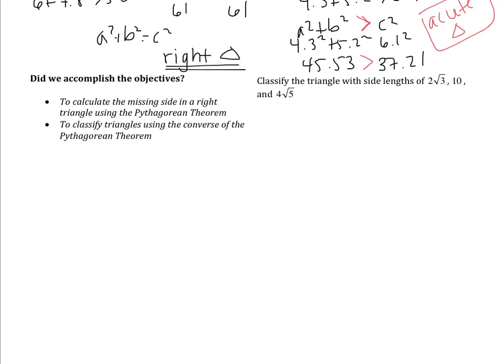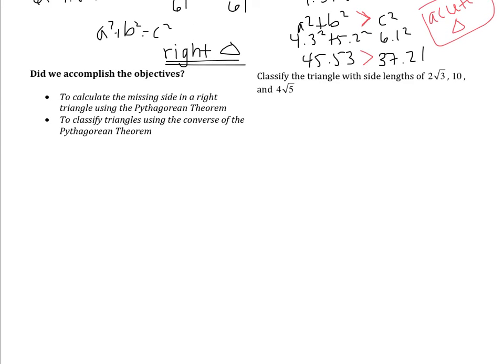That's the end of notes for 7.1 and 7.2. Did we accomplish the objectives? We calculated the missing side in a right triangle using the Pythagorean Theorem in section 7.1, and we classified triangles using the converse in section 7.2. Your last example is another classifying example: classify the triangle with side lengths of 2 root 3, 10, and 4 root 5. When you come to class tomorrow, I will be checking to see that you have this completed. If you don't, you will not receive credit. See you tomorrow.